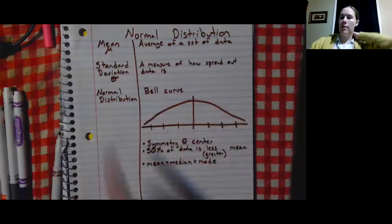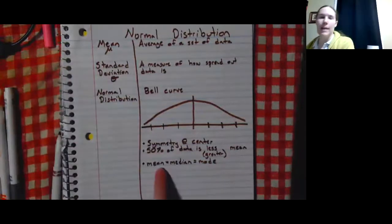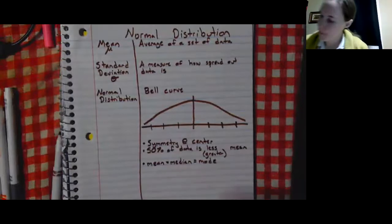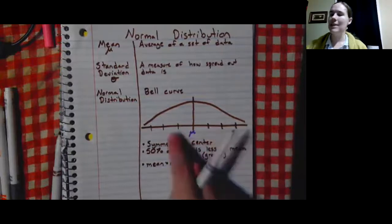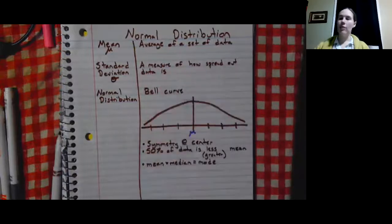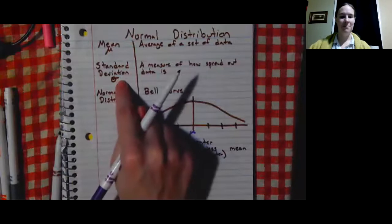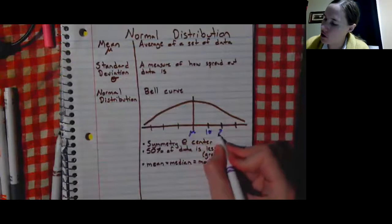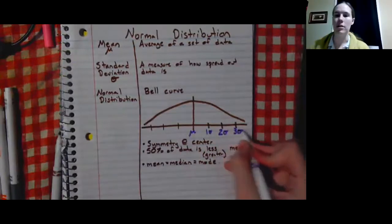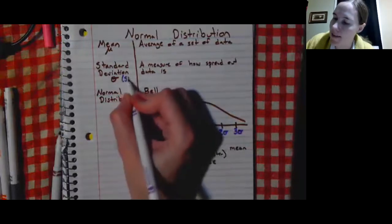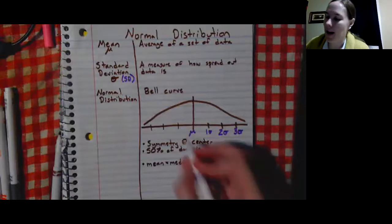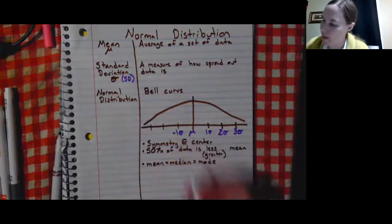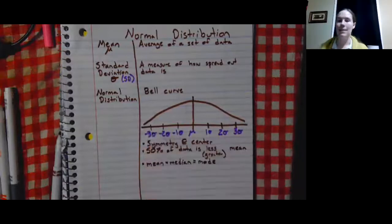Since mean equals median equals mode, the mean goes right in the center of the curve. The lines to the right and left represent how spread out the data is — that's where our standard deviations go. Moving right: one standard deviation, two standard deviations, three standard deviations. You might also see SD written instead of the symbol. The same applies to the left, labeled as negative one, negative two, and negative three standard deviations.